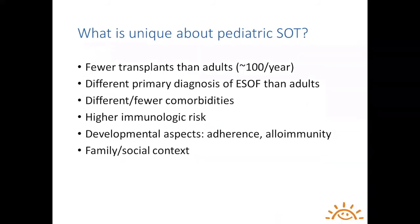What's unique about pediatric solid organ transplantation? In Canada, there are 50 to 60 kidney transplants and roughly the same number of heart and liver transplants done across the country annually. They differ from adults beyond just numbers — the primary diagnosis of end-stage organ failure is very different from adult cohorts, children have different and usually many fewer comorbidities, and they actually lack some comorbidities that confound analysis of graft survival and graft outcome, making them a potentially cleaner population to study alloimmune events.